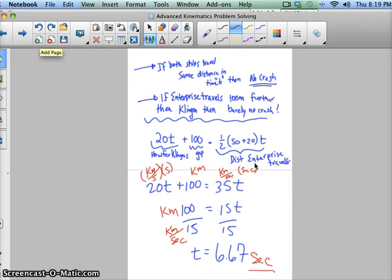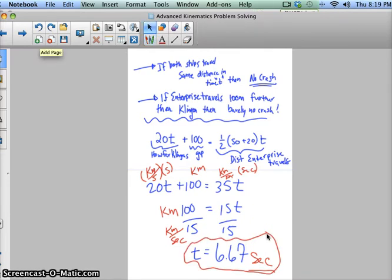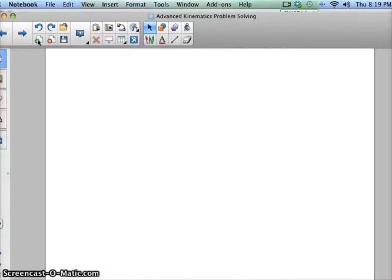Let's make sense of what we found. I'm thinking that 6.67 or 6.7 seconds, after the Enterprise starts slowing down, that's about how much time before they barely not crash. I can check this by plugging this time into each distance equation I got.